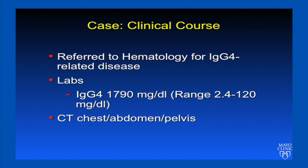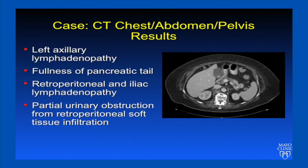The patient was referred to hematology for IgG4-related disease. Labs were drawn, including a serum IgG4 level, which was markedly elevated at 1790 milligrams per deciliter, with the upper range of normal being 120 milligrams per deciliter. CT scanning of the chest showed left axillary lymphadenopathy. In the abdomen, there was fullness of the pancreatic tail and retroperitoneal and iliac lymphadenopathy. Additionally, she had partial urinary obstruction from retroperitoneal soft tissue infiltration, which explained her three-day history of flank pain.